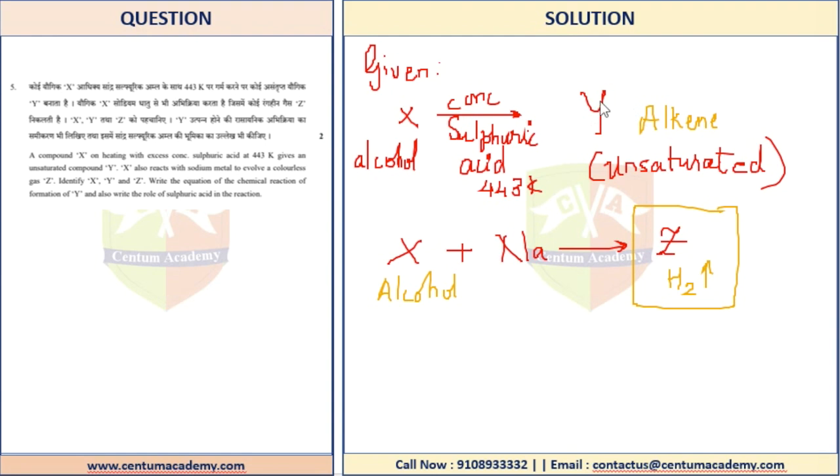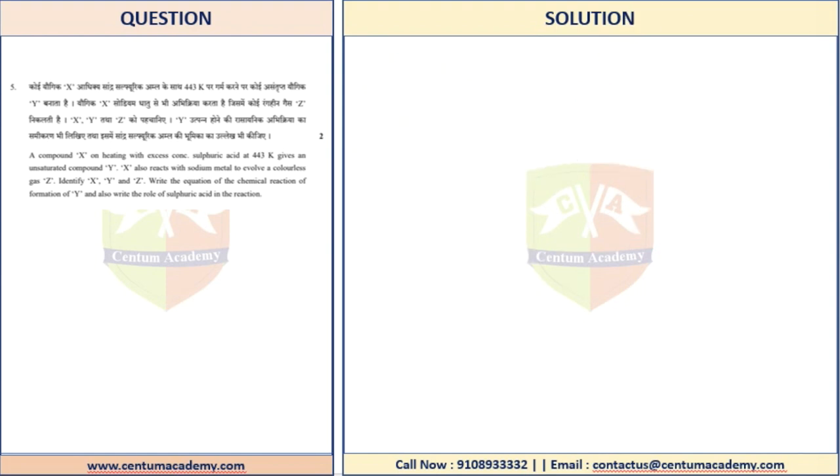So one thing we are very sure that yes, hydrogen gas can suit the answer. Now which alcohol it is and which alkene it is, this can be according to our own assumptions or something that we can actually work out on. Now if you have to write this answer, once we have understood this rough work, what we will actually do is basically begin writing the answer saying that yes, we have identified X to be an alcohol.